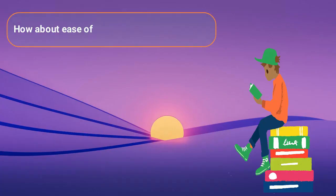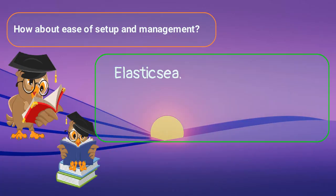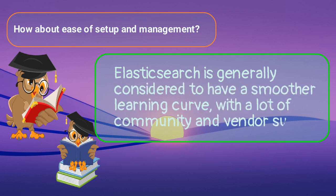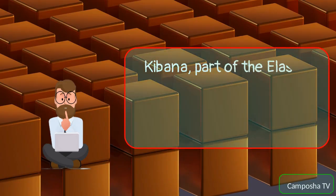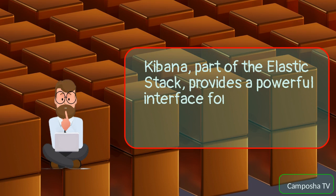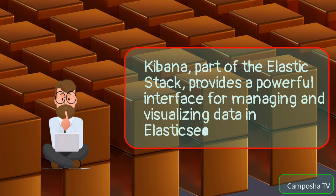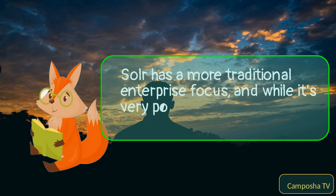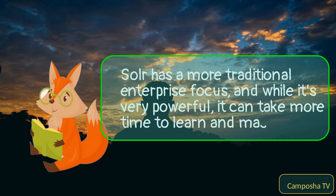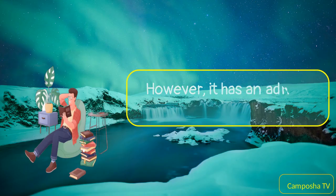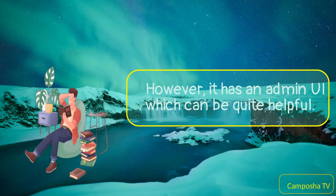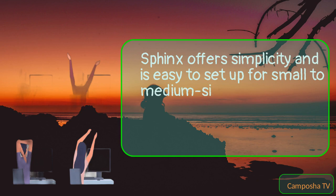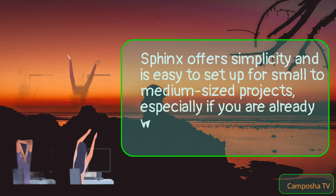How about ease of setup and management? Elasticsearch is generally considered to have a smoother learning curve, with a lot of community and vendor support. Kibana, part of the Elastic stack, provides a powerful interface for managing and visualizing data in Elasticsearch. Solr has a more traditional enterprise focus, and while it's very powerful, it can take more time to learn and master. However, it has an admin UI which can be quite helpful. Sphinx offers simplicity and is easy to set up for small to medium-sized projects, especially if you are already working within a SQL environment.